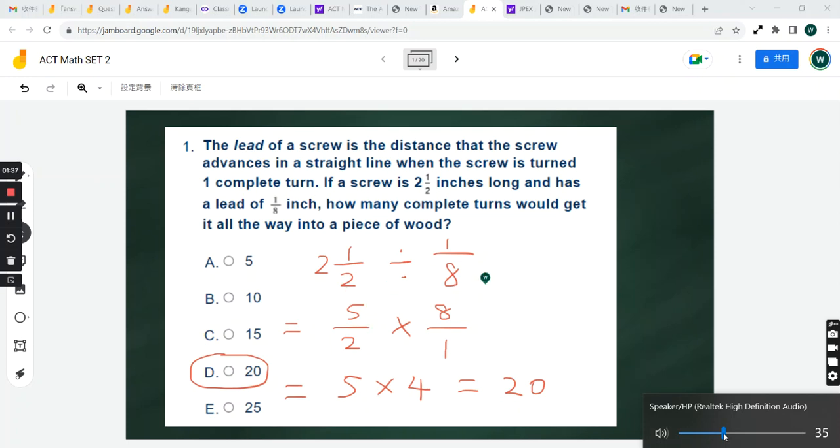Divided by 1/8 is equivalent to multiplying by 8. So 5/2 times 8. Now you have a common factor of 2 here. So you can cancel this 2, and this will become 4.